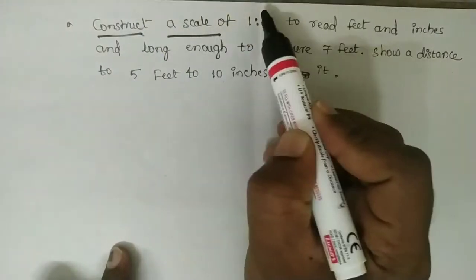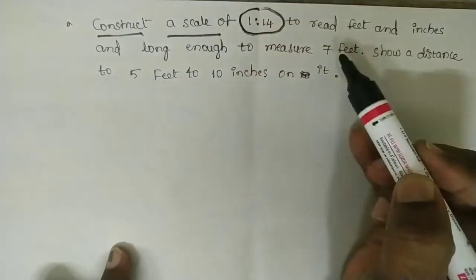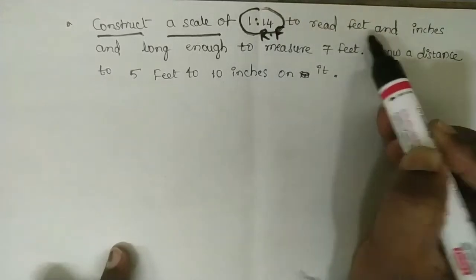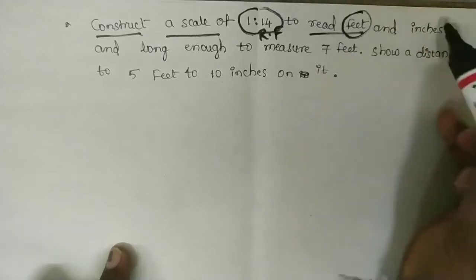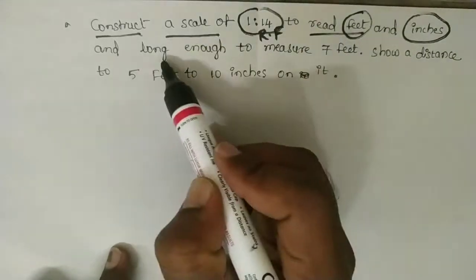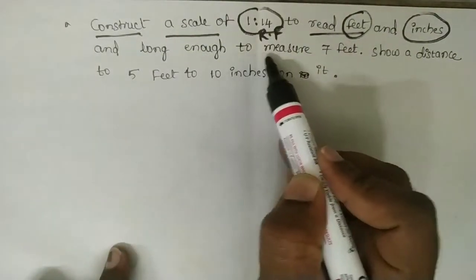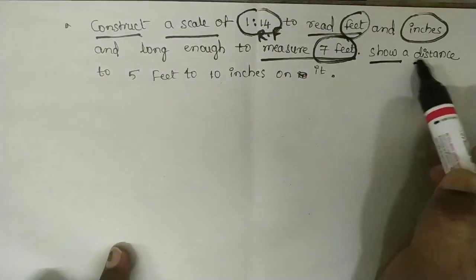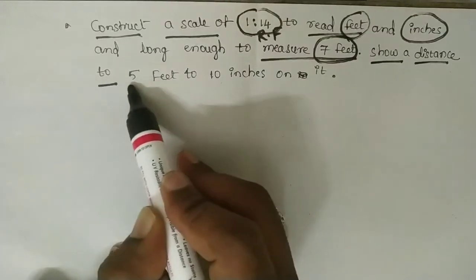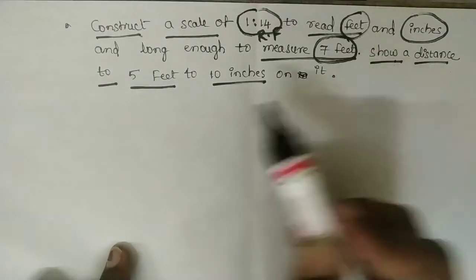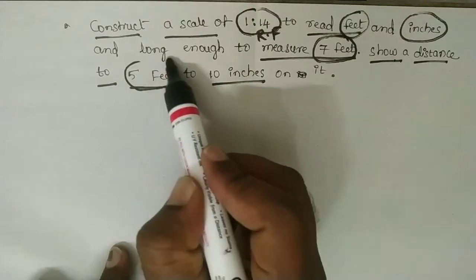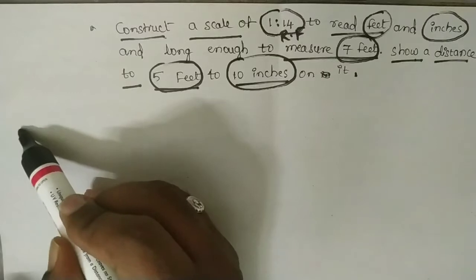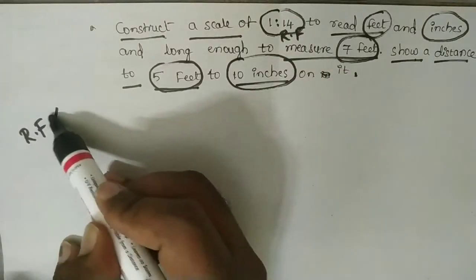Construct a scale of 1 is to 14 — the RF is to read feet and inches — long enough to measure 7 feet. This is the maximum length of 7 feet. Show a distance of 5 feet and 10 inches on it.